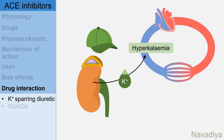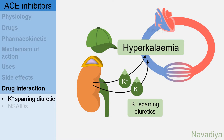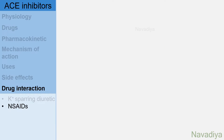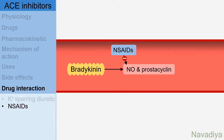Now let's see the drug interactions. First, with potassium-sparing diuretics: we know that ACE inhibitors cause hyperkalemia, so if you give potassium-sparing diuretics on top of this, there will be increased risk of hyperkalemia. Next drug interaction is with NSAIDs: we know that the vasodilator effect of bradykinin is mediated by nitric oxide and prostacyclin synthesis, and NSAIDs inhibit this, so this vasodilator effect is lost if the patient is taking NSAIDs simultaneously.